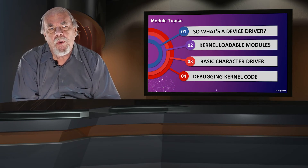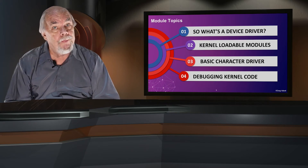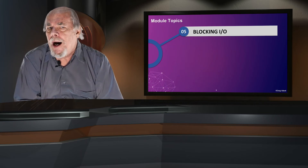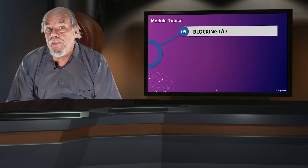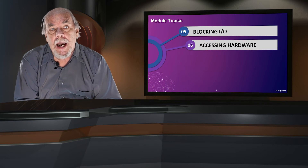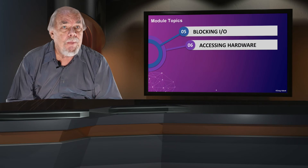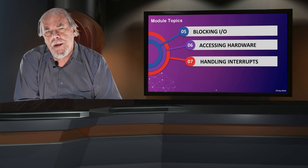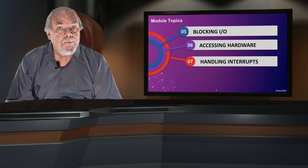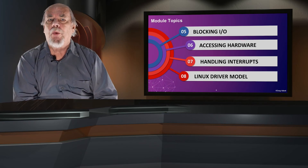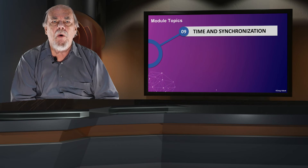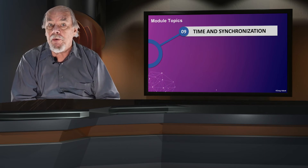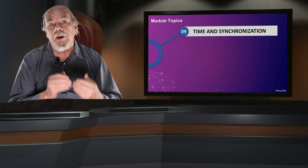And with that under our belt, we will take a look at the problems that come up when we're trying to debug kernel code. Next we'll move on to blocking I/O — that is, what happens if data can't be transferred when you request it. Then we'll see how drivers access real hardware. That'll be followed by a related lesson that deals with interrupt handling. Then we'll take a look at the Linux device driver model. We'll see how the kernel manages time, and we'll look at the various synchronization mechanisms that help us deal with concurrency issues.